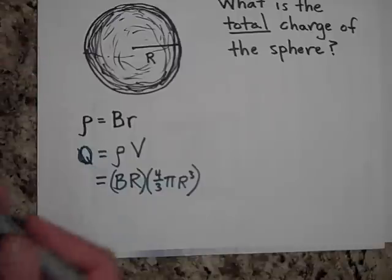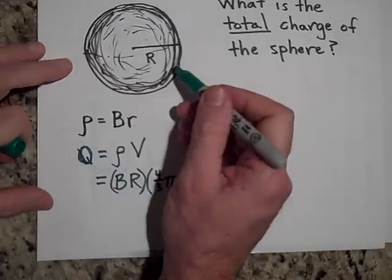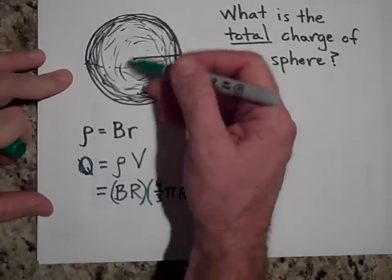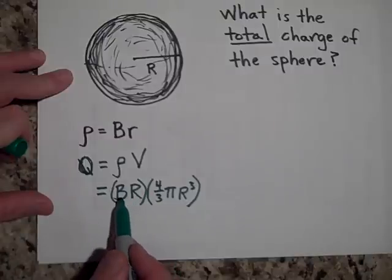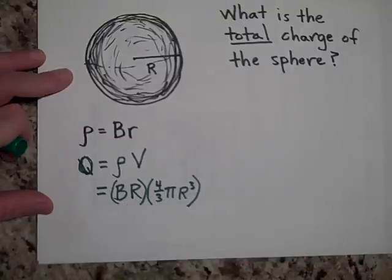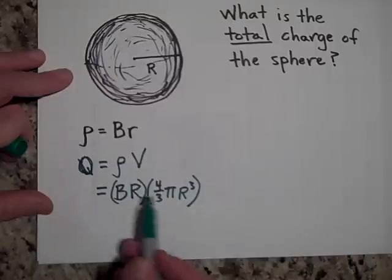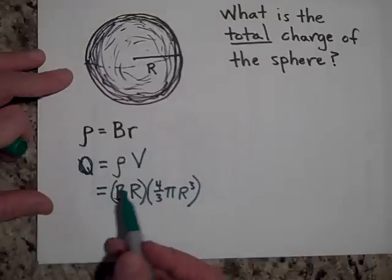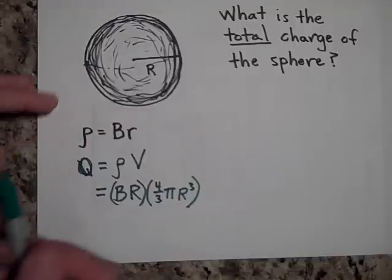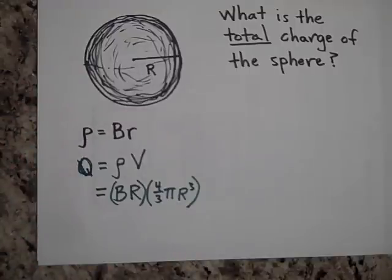So if it were, you see all the, how dark it is here? If it were that dark throughout the entire sphere, then that's what you would get. It'd be just B times R times four thirds pi R cubed. See the math, you're not telling the math at all here that the charge density actually varies. So how do you do this?